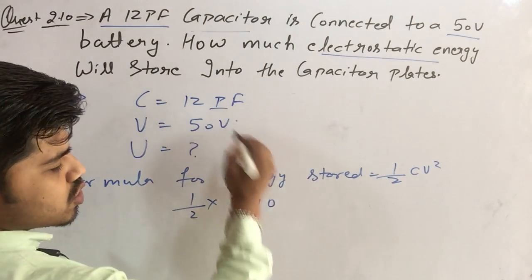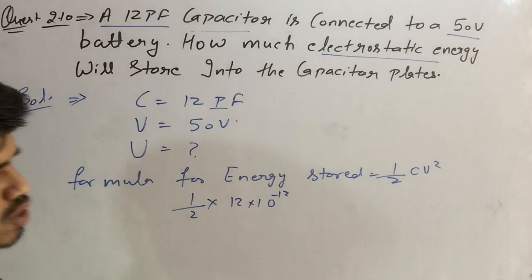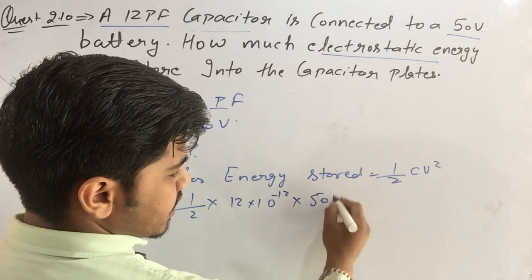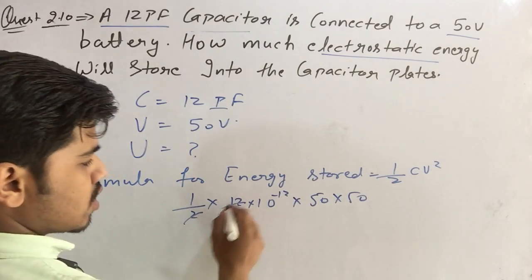C equals 12 into 10 to the power minus 12 because it is pico. V equals 50, and square.